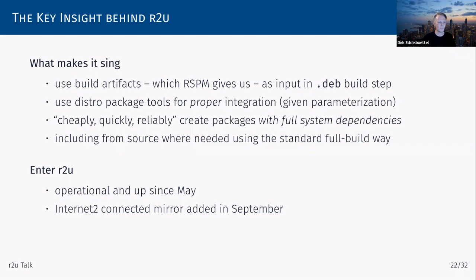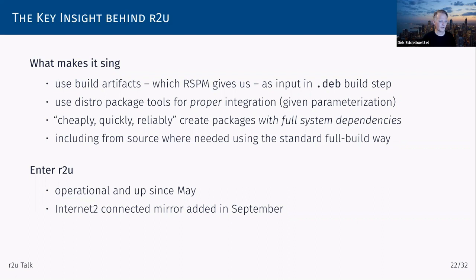The big idea I implemented over two weekends in April as a proof of concept was to take this large task of building all of CRAN from scratch for Debian/Ubuntu and reduce it by taking RSPM's binaries and essentially just re-wrapping them from tar balls into deb files, then providing repository metadata around this. I had that up and running in May, pointed some friends at it, got thumbs up. With the UIUC connection, we put this on a virtual machine on the Urbana campus — super well connected — and it's been averaging a couple thousand packages a day, with some days north of 20,000.